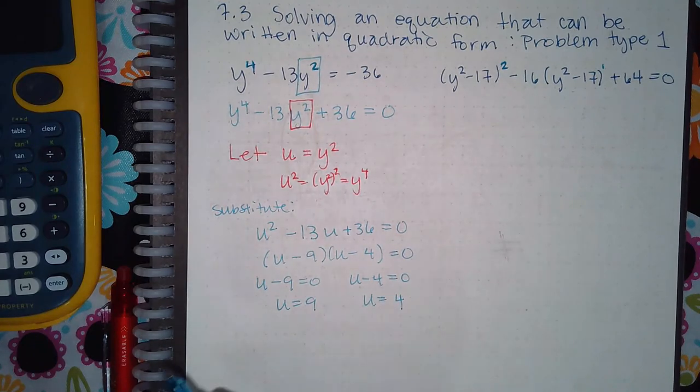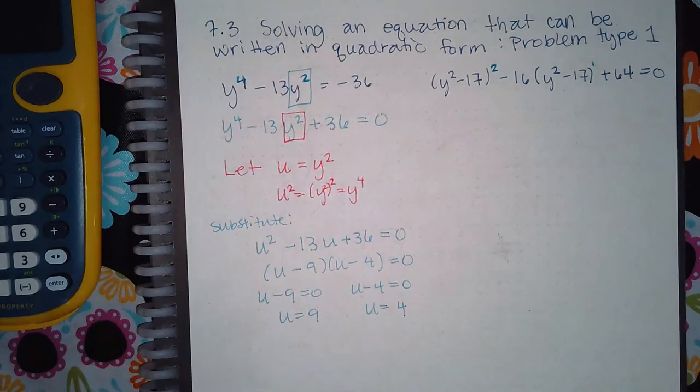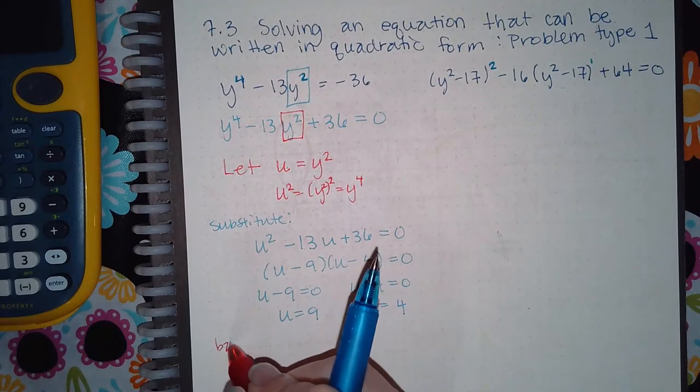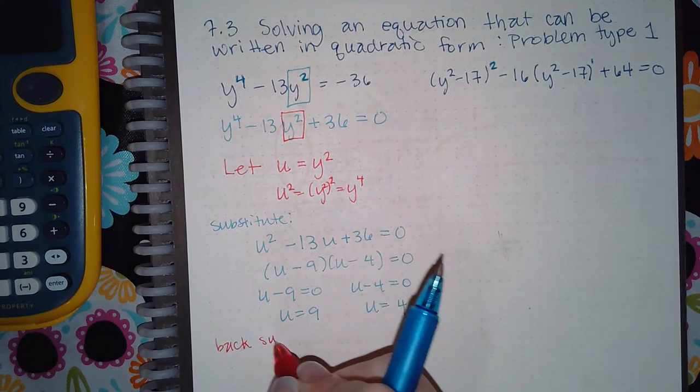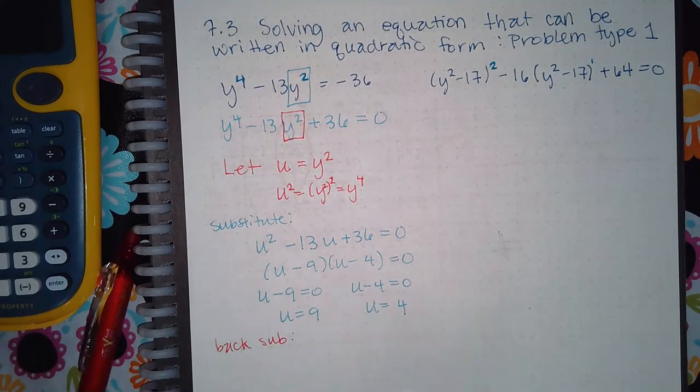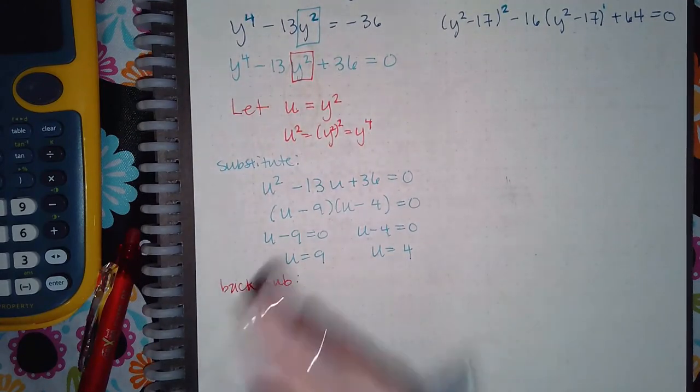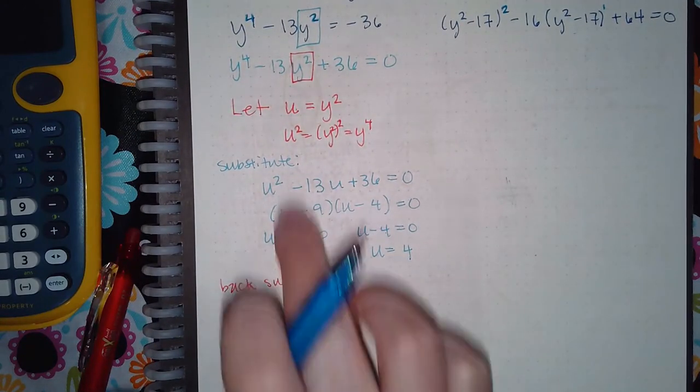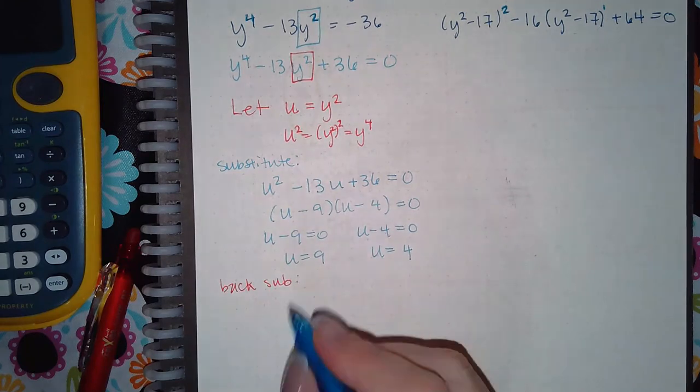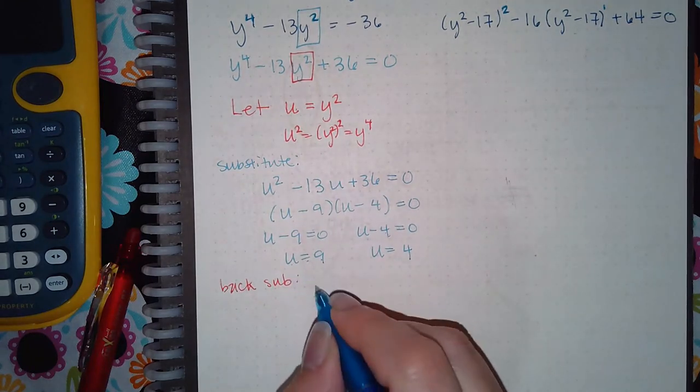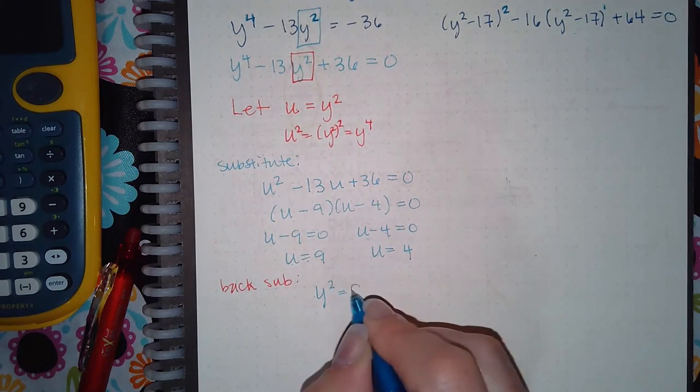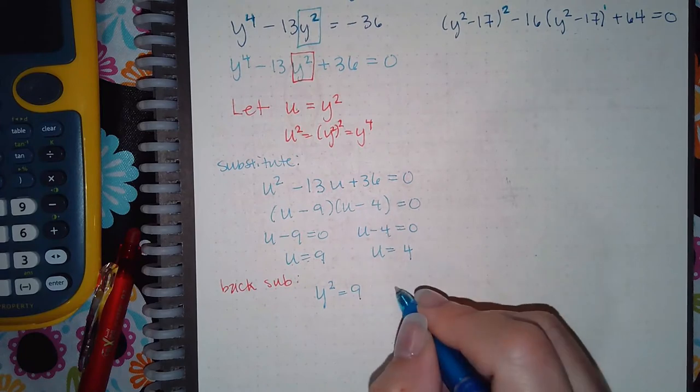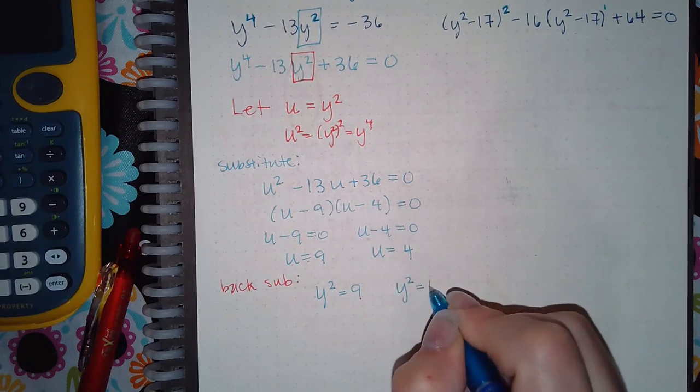And then what you do is you back sub. Because the problem didn't ask you to solve for u. The problem asked you to solve for y. So you back sub. What was u? u was y squared. So instead of u equal to 9, it's actually y squared equal to 9. And same thing over here. This is actually y squared equal to 4.